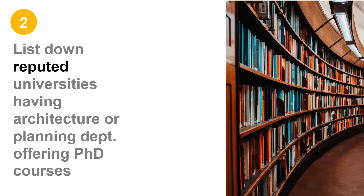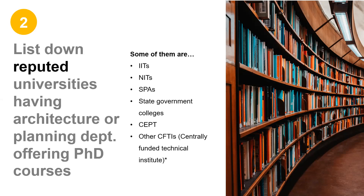Point number two. List down reputed universities offering PhD degree courses. Most of us are aware that in India there are a limited number of architecture and planning colleges that have a well-established PhD structure. But due to governmental efforts for boosting PhD research, several colleges have started or are trying to start their PhD program that may come under your radar. So first make yourself aware of these colleges. A few of them include IITs, NITs, SPAs and other CFTIs or centrally funded technical institutes — the link is provided in the description box below.